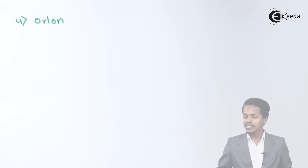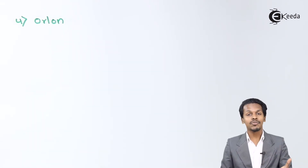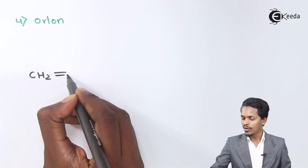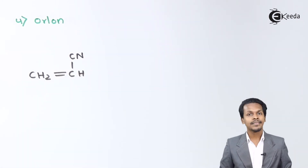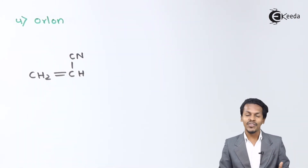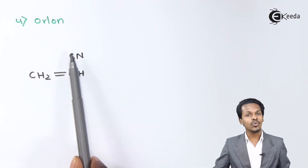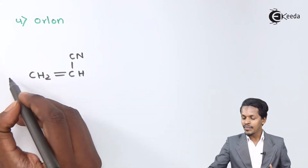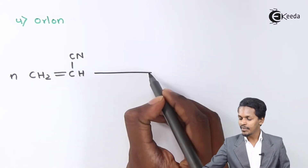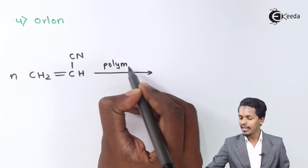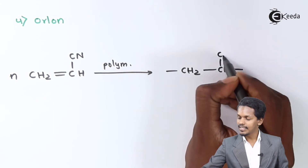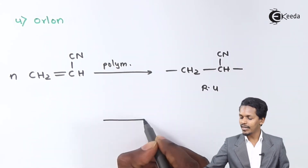Next is Orlon, also known as PAN, which stands for polyacrylonitrile. The monomer used is CH2=CH–CN, which is acrylonitrile. This is very similar to the previous reaction — the only difference is that instead of a chloro group we have a cyano group. Using n moles of acrylonitrile and undergoing polymerization, the repeating unit is –CH2–CH(CN)–.